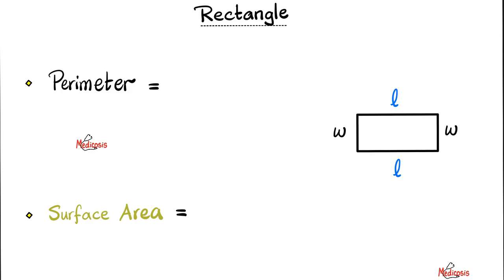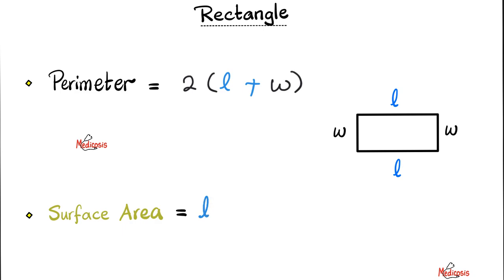The rectangle is similar to the square, but there is a difference — not all of the sides are equal in length. Only two sides are equal, we call this the length, and the other two sides are also equal, so we call them the width. But the width is not the same as the length. If the width is the same as the length, then this becomes a square. The perimeter is L plus W plus L plus W, or simply 2 multiplied by (L plus W). The surface area is length multiplied by width.